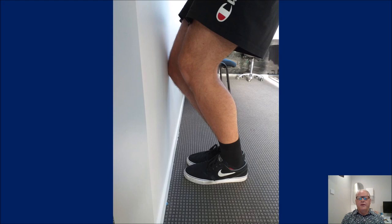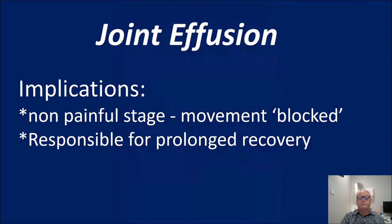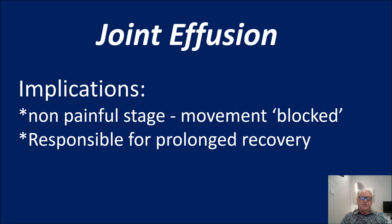Here's an example of someone with a joint effusion showing limitation — they can get the right knee to the floor but the left knee they can't bend. When you ask why, they say the ankle's not allowing movement. When you ask if it's pain, they say no — it feels like a block of wood in the ankle. Non-painful limitation of movement: think joint effusion. They are responsible for prolonged recovery. Many years ago surgeons would aspirate this effusion and inject a steroid — but are we opening that client up to premature arthritis, particularly in younger athletes?